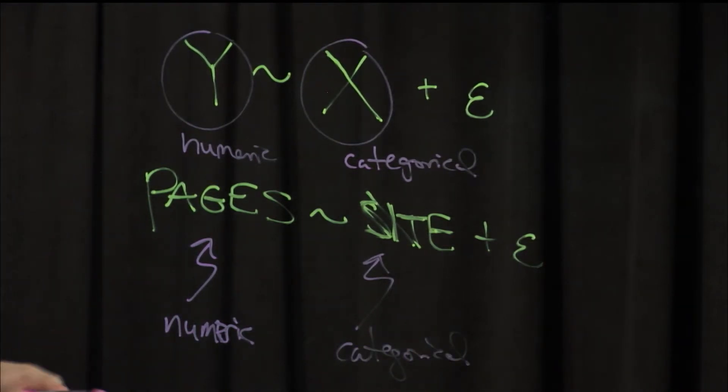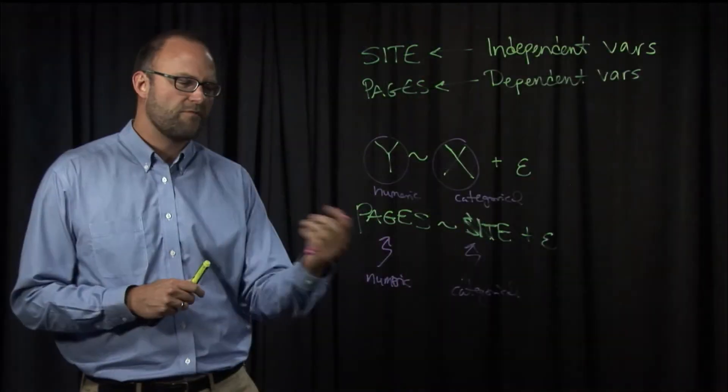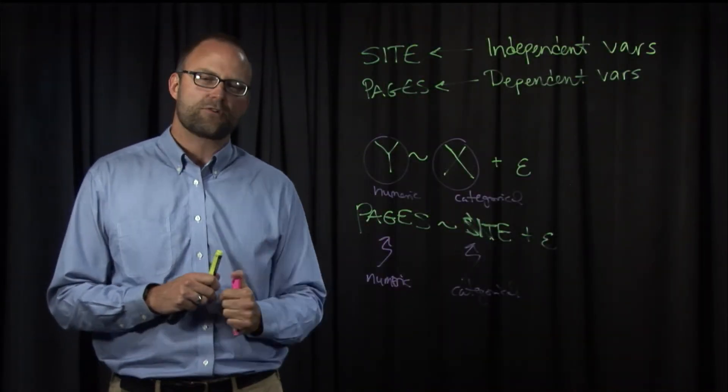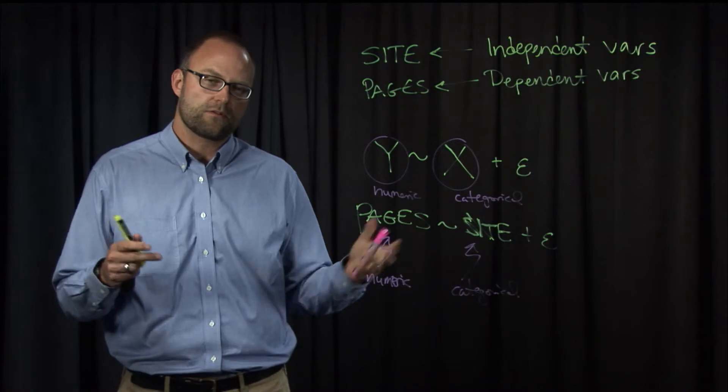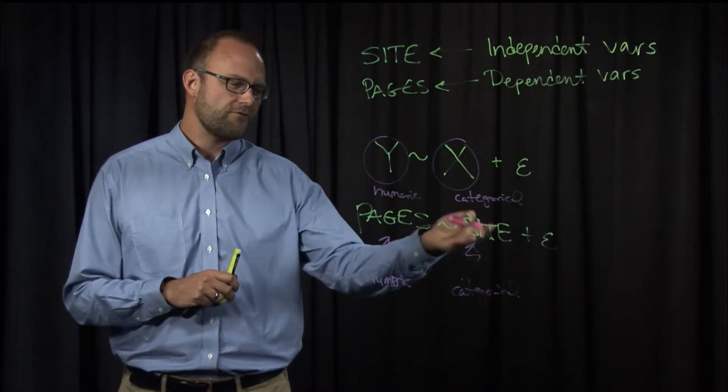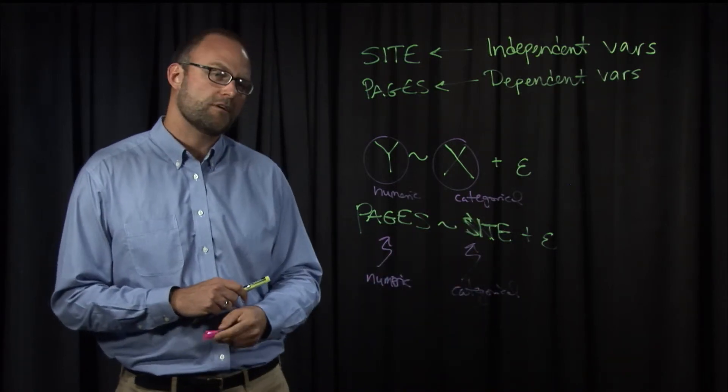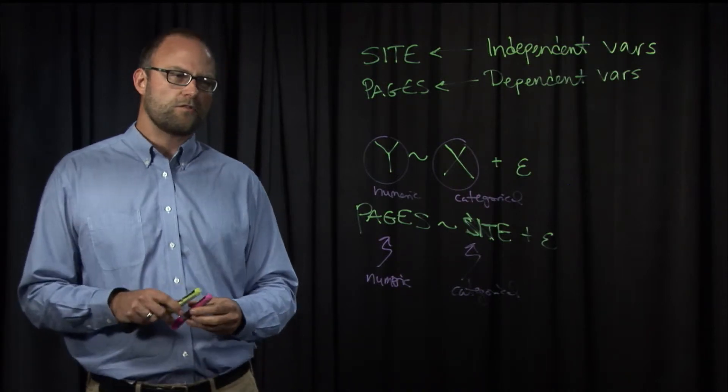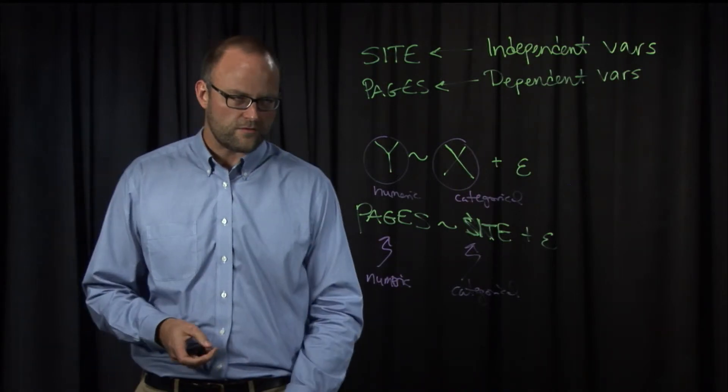So we have a function that we're looking at here, which is the number of pages, a numeric outcome could be the result of differences in a categorical input, or independent variable. So those are variable types, and we'll see that throughout some of our analyses.